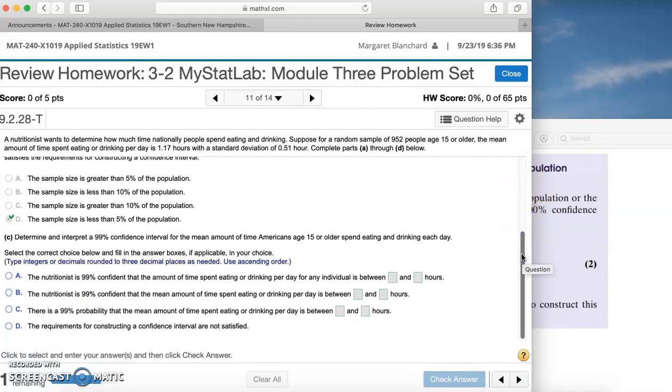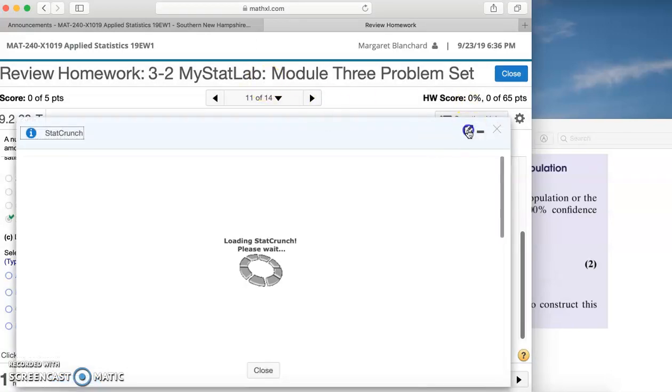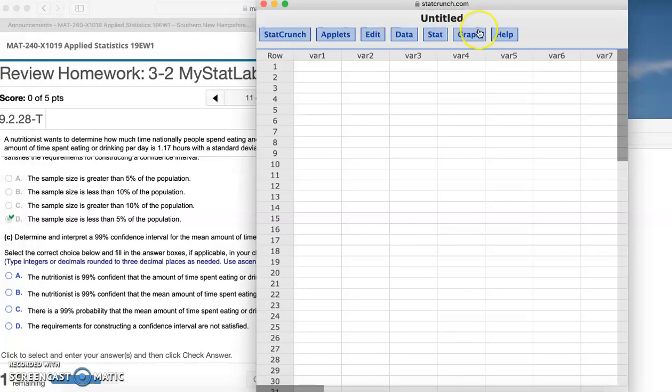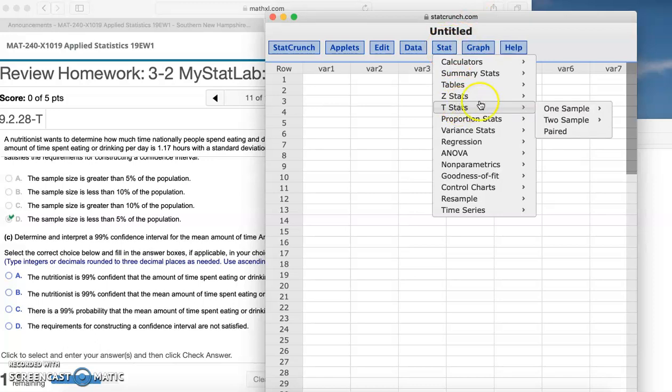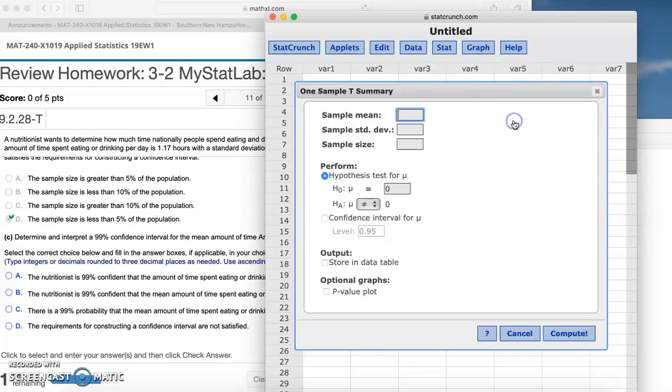All right. Determine and interpret a 99% confidence interval for the mean amount of time Americans age 15 or older spent eating and drinking each day. Let's go ahead and open up StatCrunch. I'm going to pop that out so we can look at them side by side. Now, we're doing the population mean, we are not doing the population proportion. That means we're going to go to Stat, T-stats. Here we have one sample, and we have with summary. We don't have a data set, we just know the sample mean and the sample standard deviation.